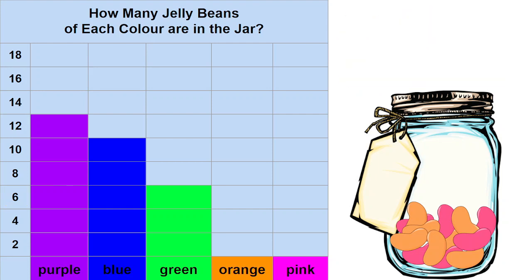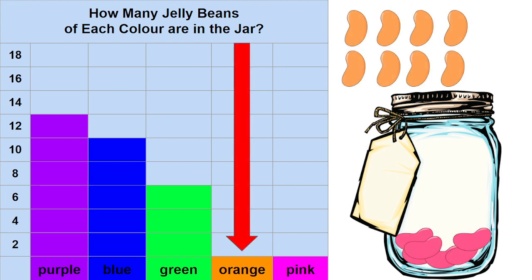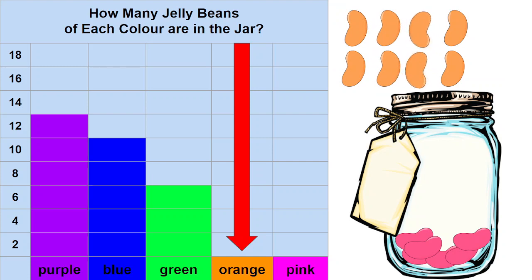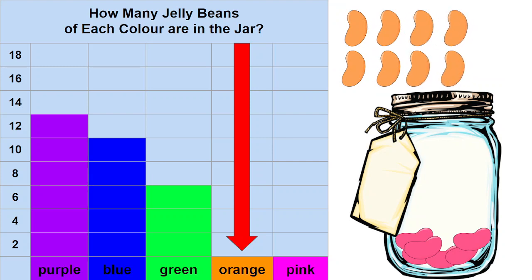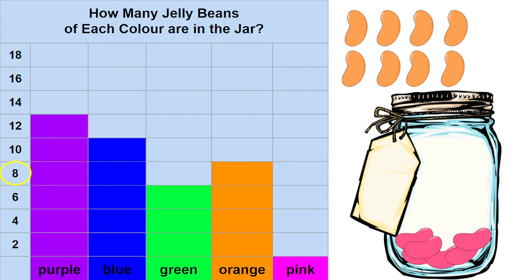Now let's count the orange jelly beans. I'll take those out of the jar and then we'll count them together: 2, 4, 6, 8. We'll find 8 on the scale of our graph and then we'll fill in the orange column all the way up to 8.